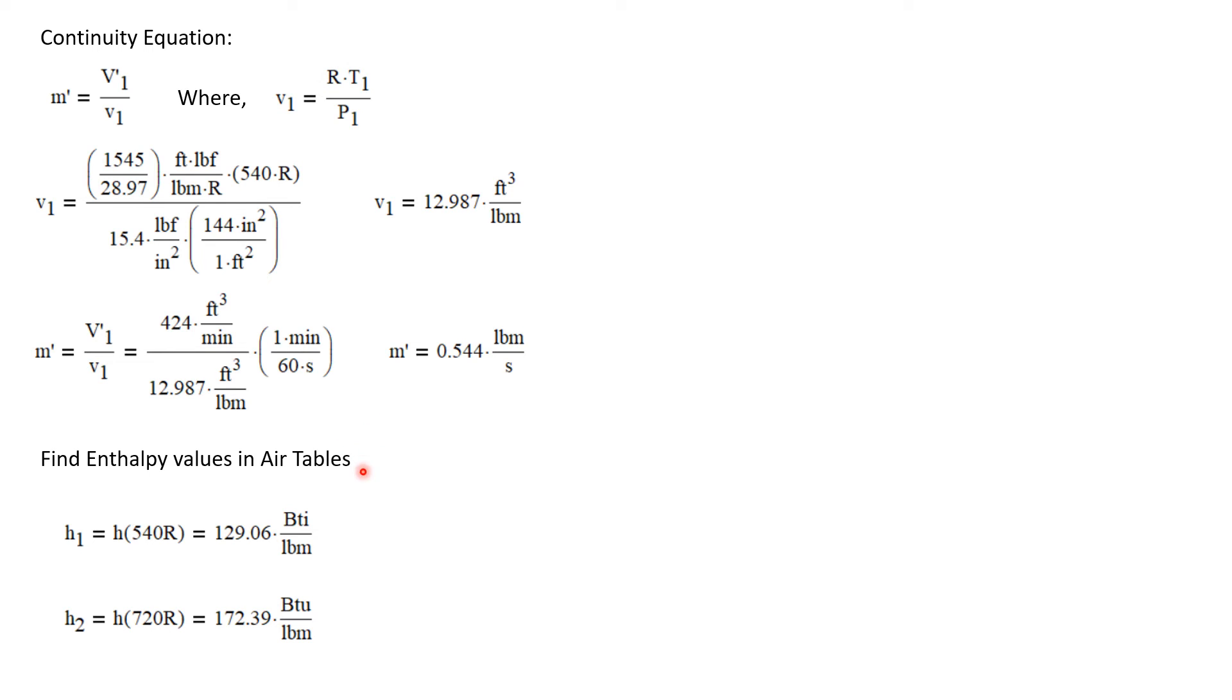I need the enthalpy values at both state one and state two. And I can get them from the air tables. The enthalpy at the inlet is just the enthalpy at 540 degrees R, and I can get that value out of the air table. The enthalpy at the exit is just the enthalpy at 720 R in the air table. And I get that value.